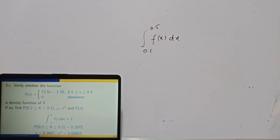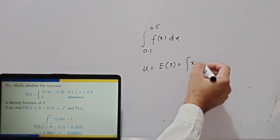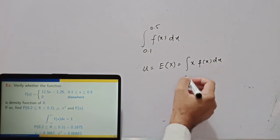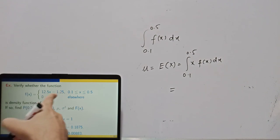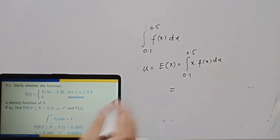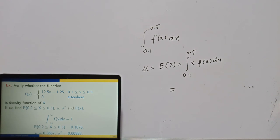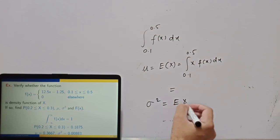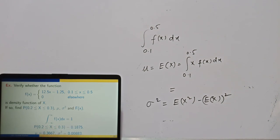To find the mean, compute E(x) = integral of x·f(x) dx over the range 0.1 to 0.5. Substituting the expression for f(x) and integrating gives 0.3667. Similarly, compute E(x²) by multiplying f(x) by x² and integrating over the same range. Then use the formula σ² = E(x²) − [E(x)]² to get the variance.